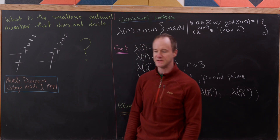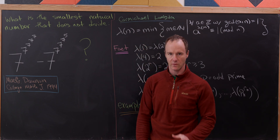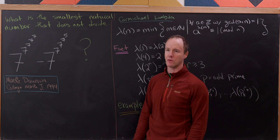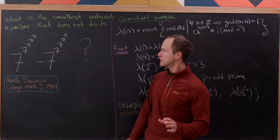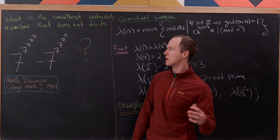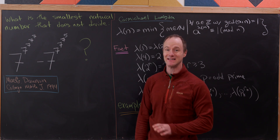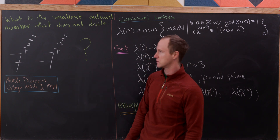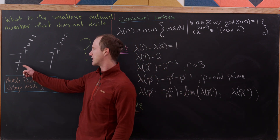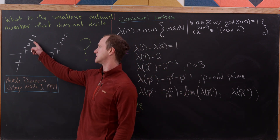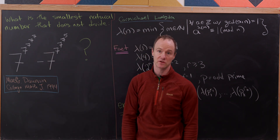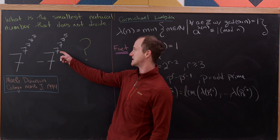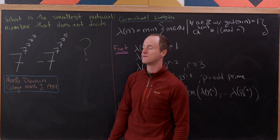Today I've got a really nice divisibility problem involving power towers. We want to find the smallest natural number that does not divide the difference of these two power towers: 7 to the 7 to the 7 to the 7 to the 7, minus 7 to the 7 to the 7 to the 5.